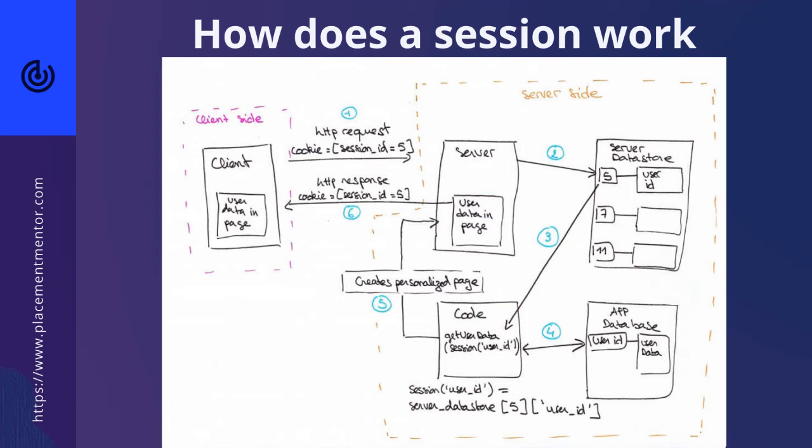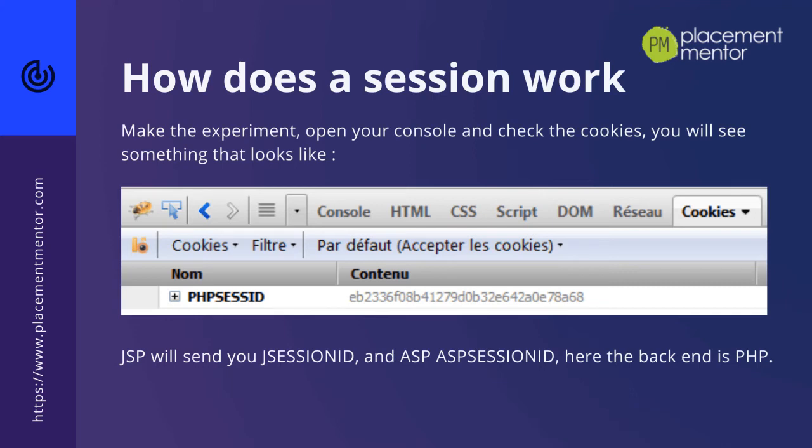Let us start from the moment when you land on a web page. When you receive a web page from the server, along with the page content itself, the server sent you, in general in a cookie, the session id that it set to identify your connection among all the requests that it gets. Make the experiment, open your console and check the cookies. You will see something that looks like this. JSP will send you jsessionid, and ASP, asp session id. Here the back end is php.